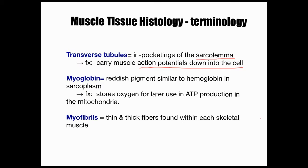Myoglobin is the protein in muscle cells that stores oxygen, similar to hemoglobin in blood. All cells need oxygen for aerobic respiration — when they use oxygen to convert glucose, they can make far more ATP than without oxygen. So myoglobin helps store oxygen for the mitochondria to convert glucose into ATP. Remember, it is ATP that can be used as an immediate source of energy; glucose must be converted to ATP first before it can be used for muscle contraction.